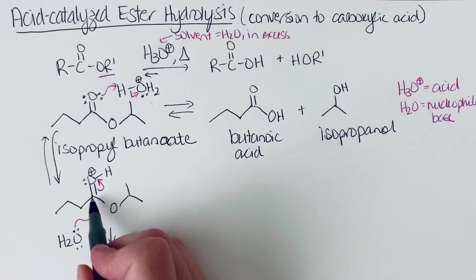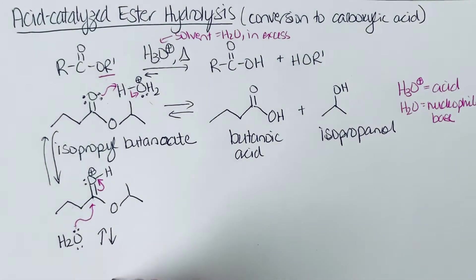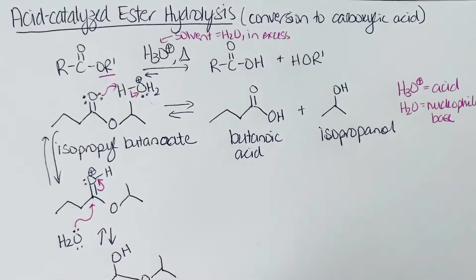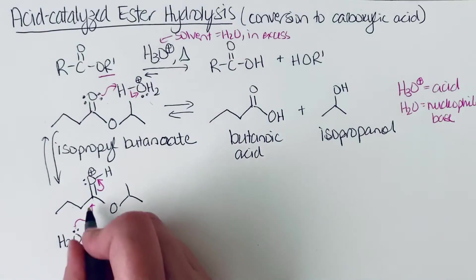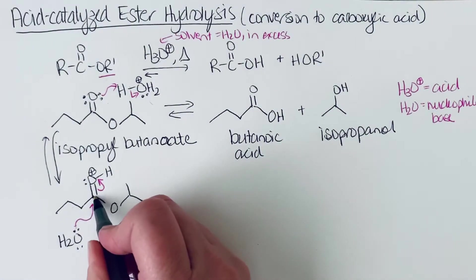And so now, after this, we are going to have four single bonds to this carbon. So this intermediate will be a tetrahedral intermediate. So we've got that OH. We still have our isopropoxy group. And we have added a water molecule. So we formed a new bond between the oxygen and the carbon.